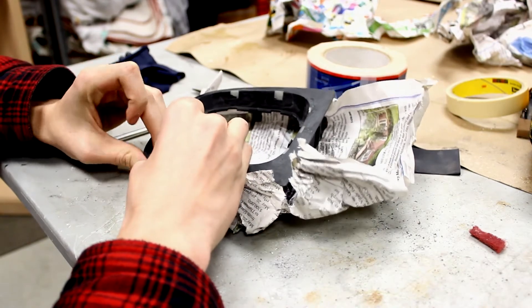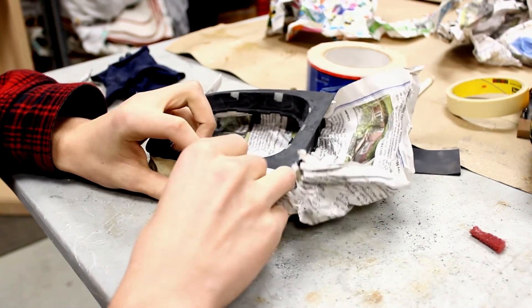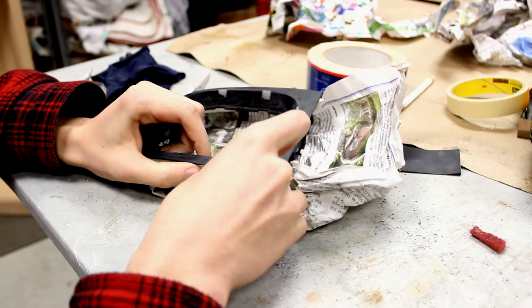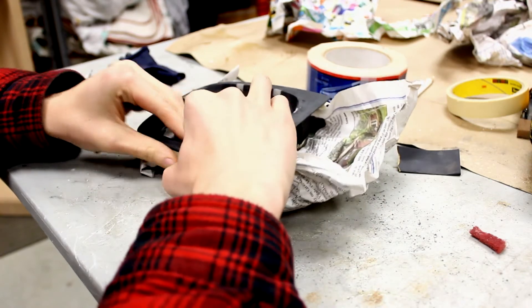At this point, you could decide whether you want to wrap, paint, or plasti-dip your trim. If you're painting or plasti-dipping like I am, mask off the trim using masking tape and newspaper. This will ensure that no paint gets on any surface that you don't want it on.